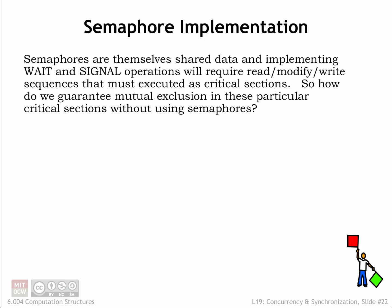Now let's figure out how to implement semaphores. They are themselves shared data, and implementing the wait and signal operations will require read-modify-write sequences that must be executed as critical sections. Normally we'd use a lock semaphore to implement the mutual exclusion constraint for critical sections. But obviously we can't use semaphores to implement semaphores — we have what's called a bootstrapping problem. We need to implement the required functionality from scratch.